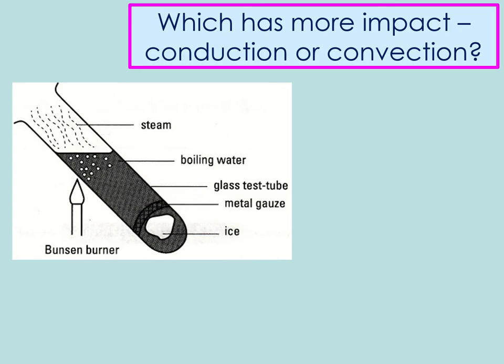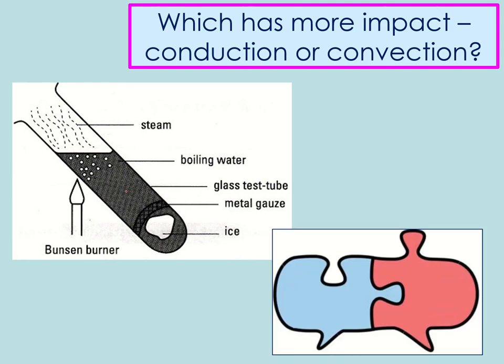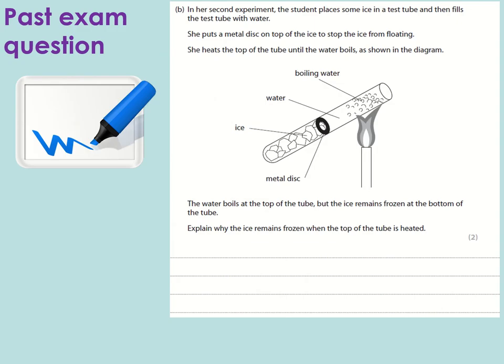Let's have a look at another question. This one you can only do if you know what conduction and convection are. This is a common exam question which is about a test tube which has got ice at the bottom. Now naturally ice floats so it's got a metal gauze to hold it down here. If you put this over a Bunsen burner what happens is that bubbles are created at the top where the water is boiling. So the question asks you which is the bigger effect here, conduction or convection. So this is an exam question on that. So it's saying explain why the ice remains frozen when the top of the tube is heated.